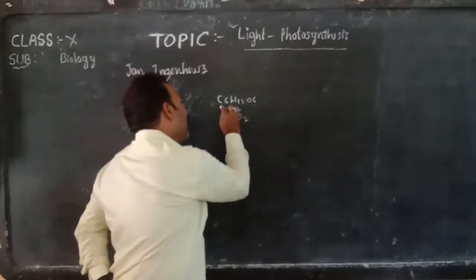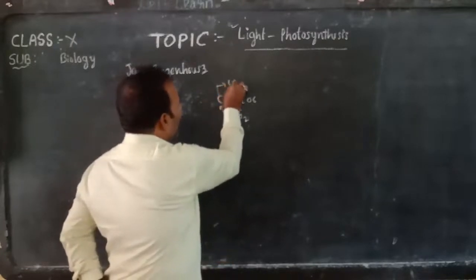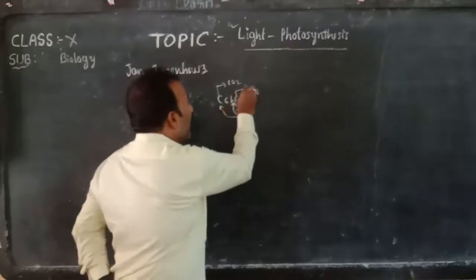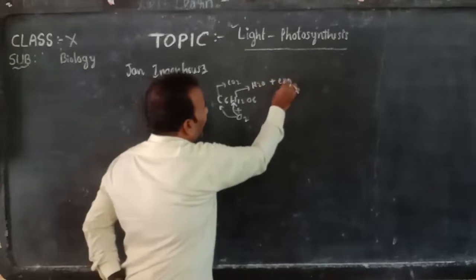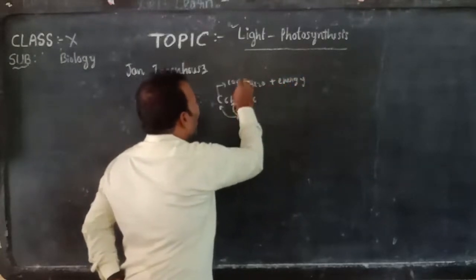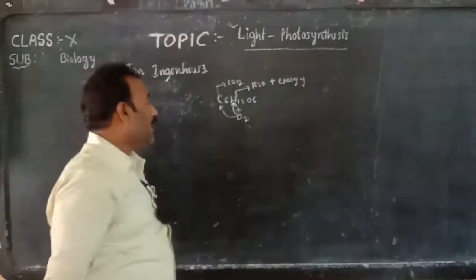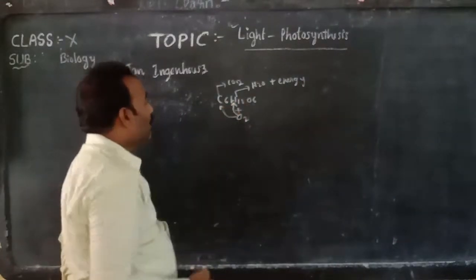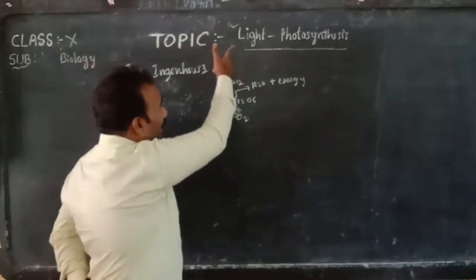When oxygen is added to food, for example glucose, oxygen combines with the carbon of the food producing carbon dioxide, and combines with the hydrogen of the food producing water. During this process energy is released — that is, by the oxidation of food.